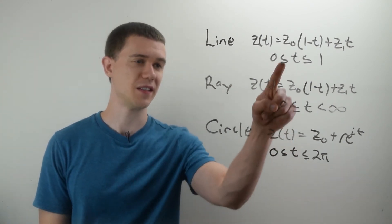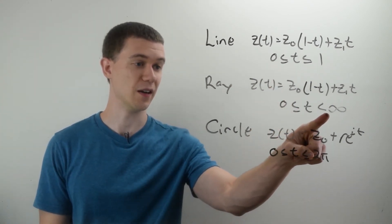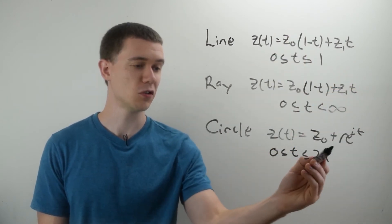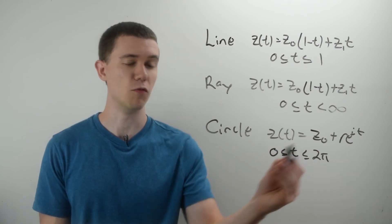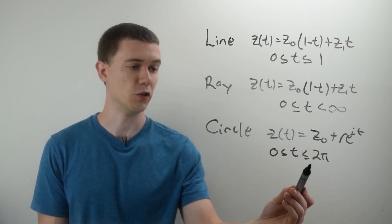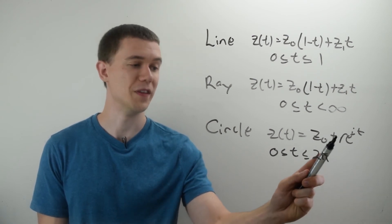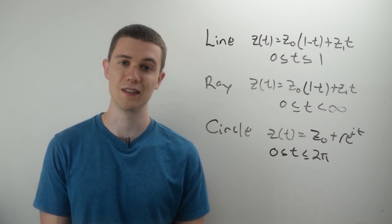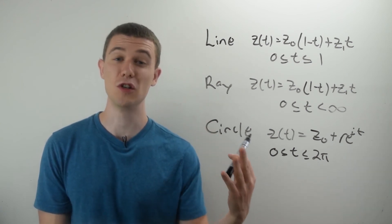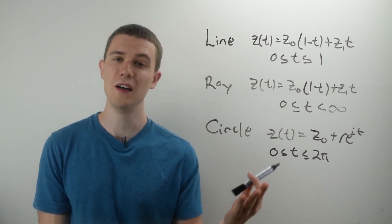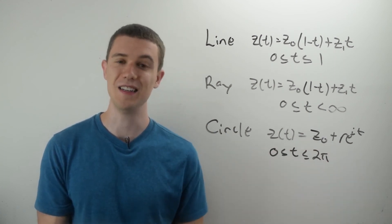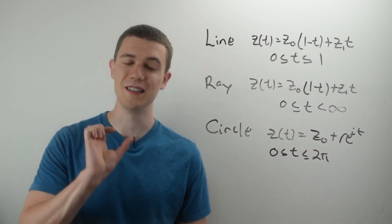You can see it's very similar to the line, except that the T value varies to infinity, so that makes that line shoot off. And then here we have a circle with center Z-naught and radius R, where T varies between 0 and 2π. This comes from the exponential form of a complex number. You'll see why that involves circles, basically because e to the iT makes up sines and cosines.